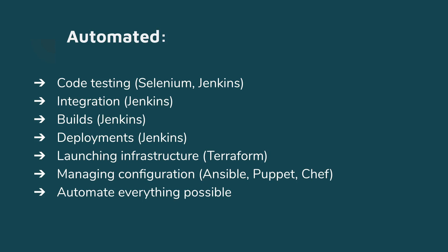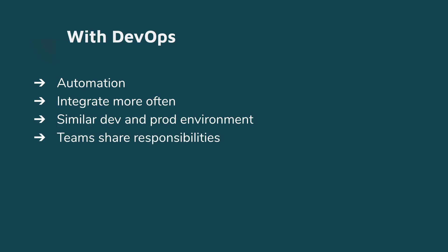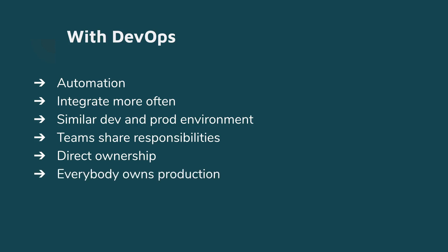With DevOps, we automate code testing, integration, building, deployment, and all kind of stuff — long story short, automate anything that's possible to automate. Automation saves a lot of time and more importantly reduces human errors. Once you write code to do something, it will always do that same thing over and over again, unlike a human who can make a mistake. With DevOps we integrate code more often, try to have similar production and development environments, teams share responsibilities, and there is direct ownership. We have automated monitoring and alerts — if something is wrong with the infrastructure, the operations team is alerted directly; if it's the application, the development team is alerted. Everybody owns the production; it's a team effort.